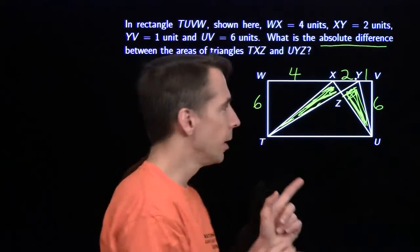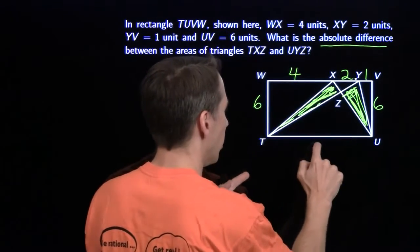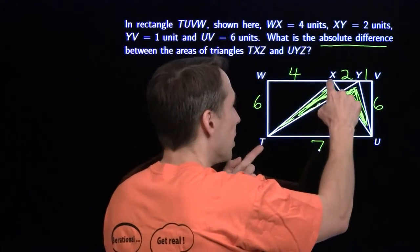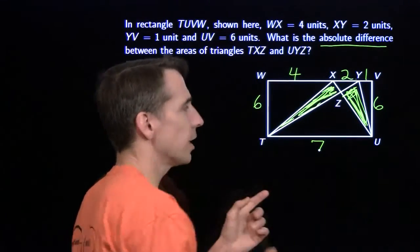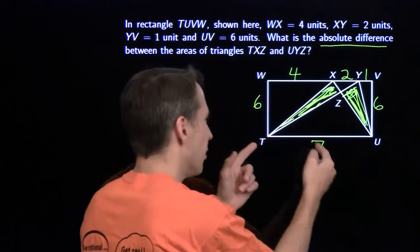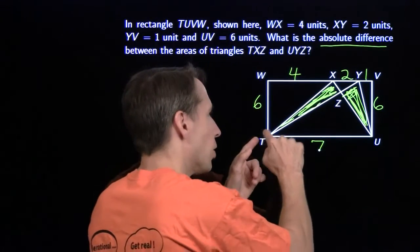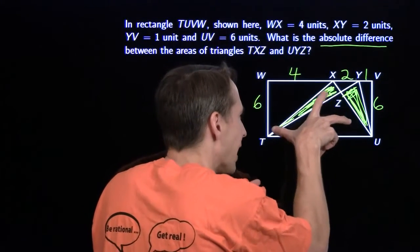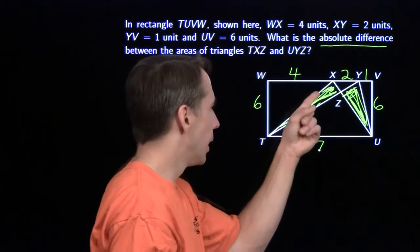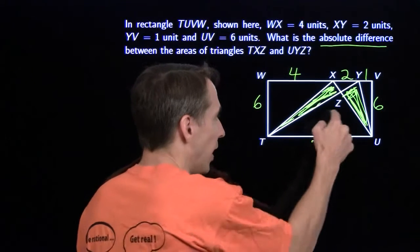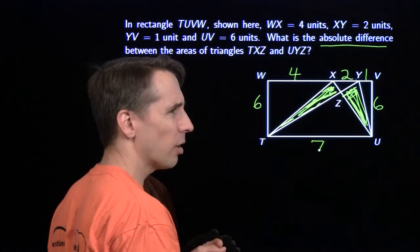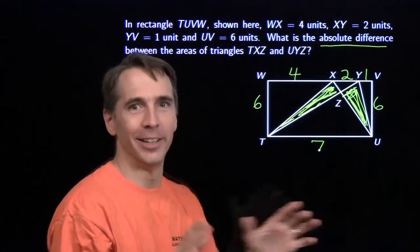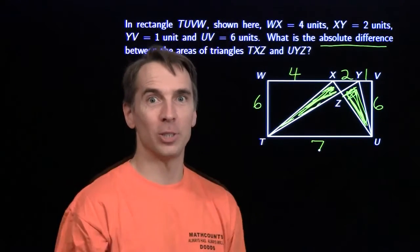The larger triangle TXU has a base equal to this side length of the rectangle — that's 7 — and the height is 6, the other side of the rectangle. So the area is 7 times 6 divided by 2. The area of triangle TXU is just half the rectangle. So now all I have to do is subtract out this piece right here. Don't bother — be strategically lazy. That's a great idea. I love this strategy.